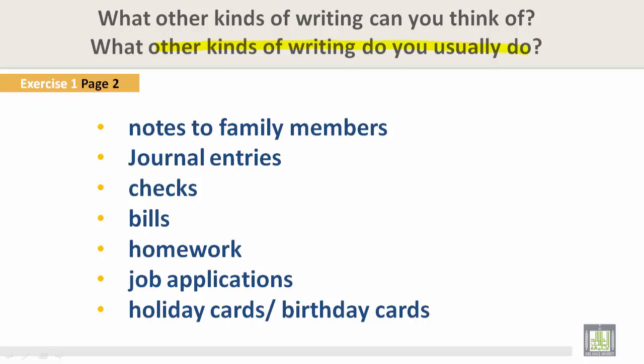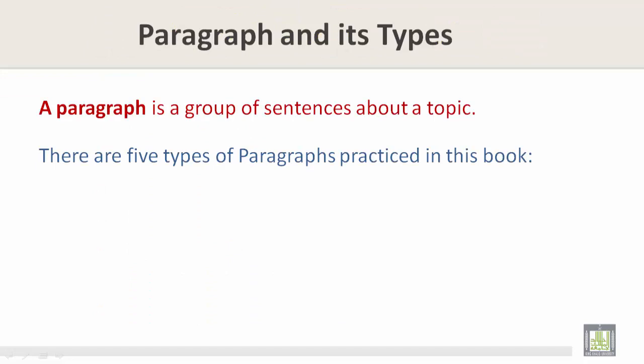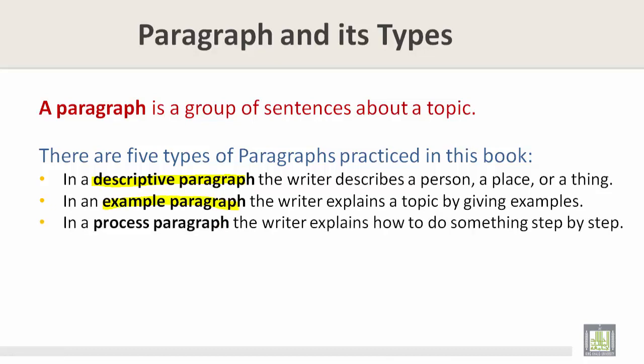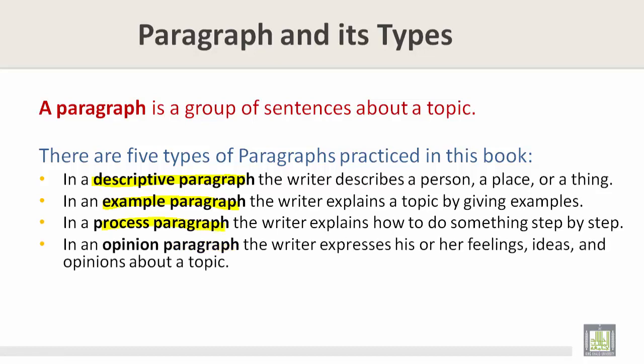There are five types of paragraphs practiced in this book. In a descriptive paragraph, the writer describes a person, place, or thing. In an example paragraph, the writer explains a topic by giving examples. In a process paragraph, the writer explains how to do something step by step. In an opinion paragraph, the writer expresses feelings, ideas, and opinions about a topic. In a narrative paragraph, the writer tells a story.